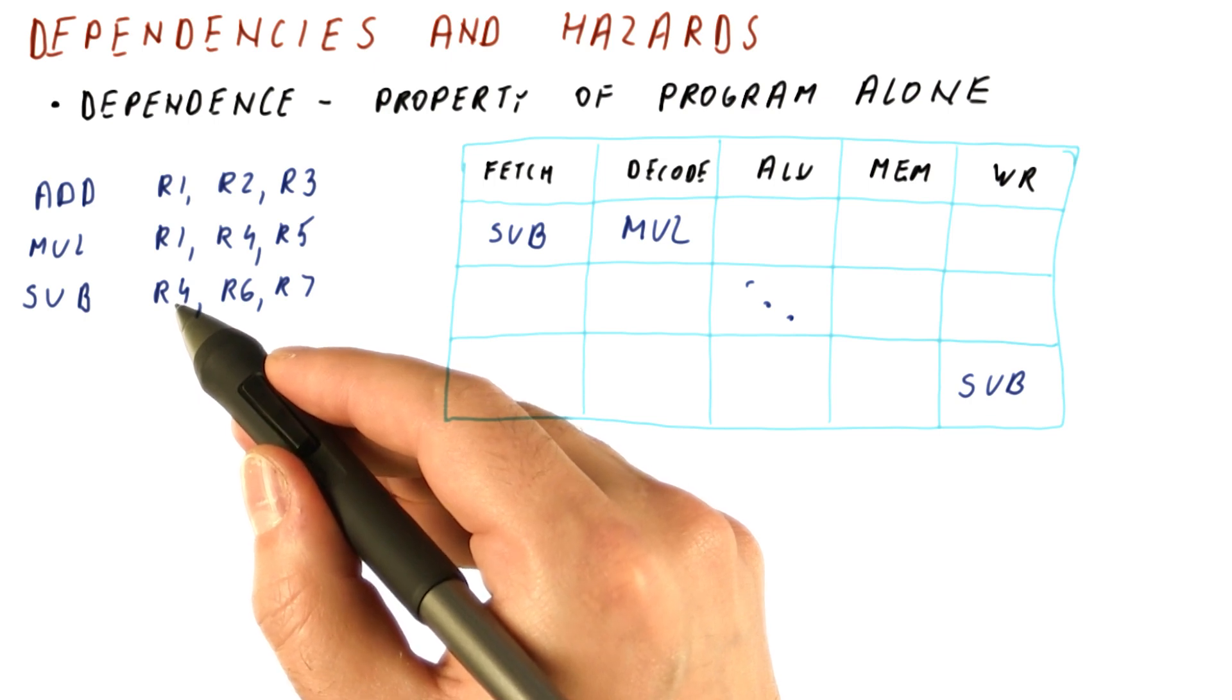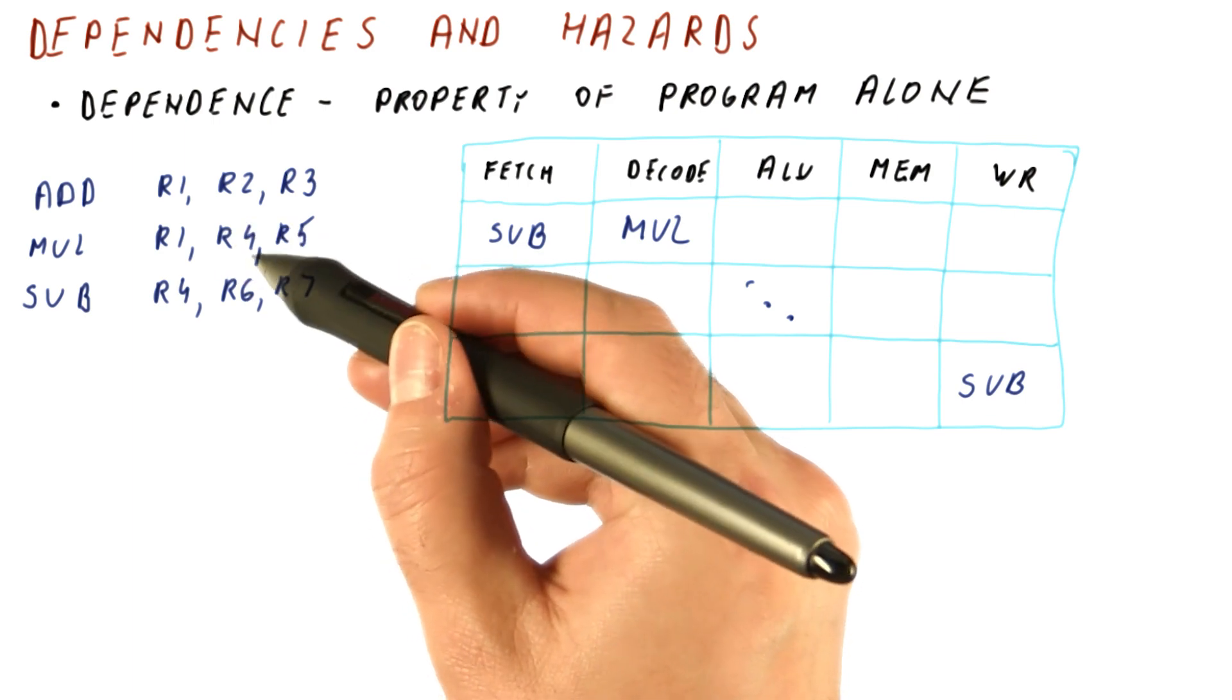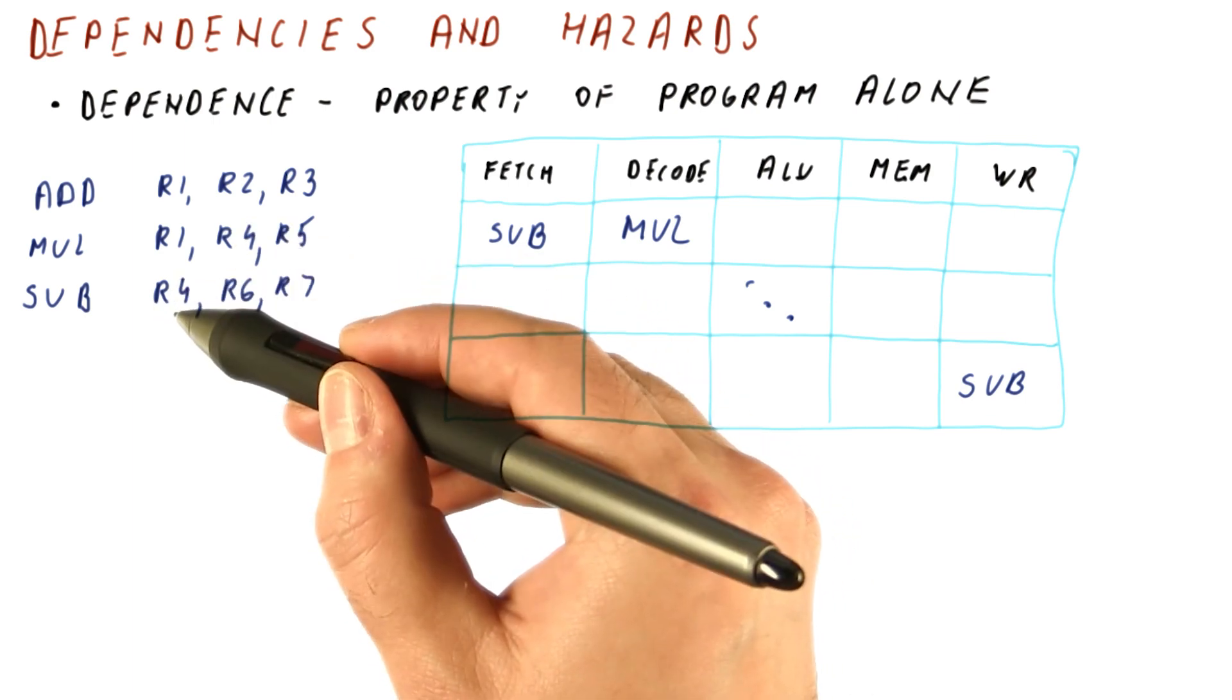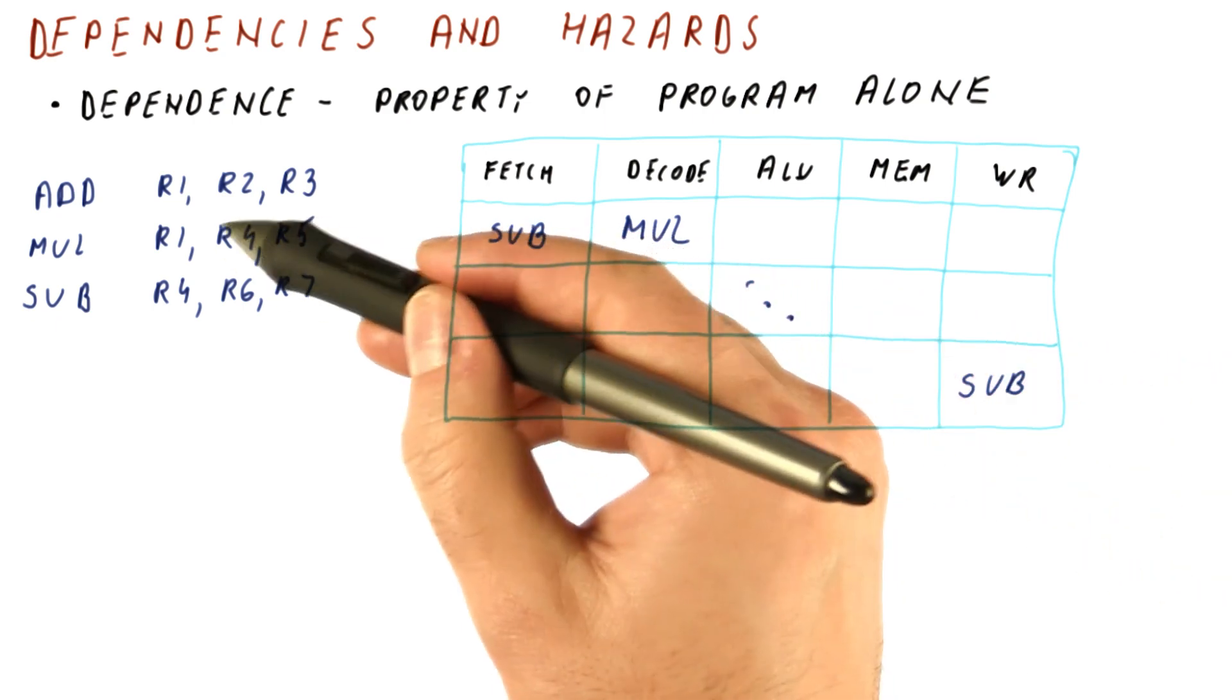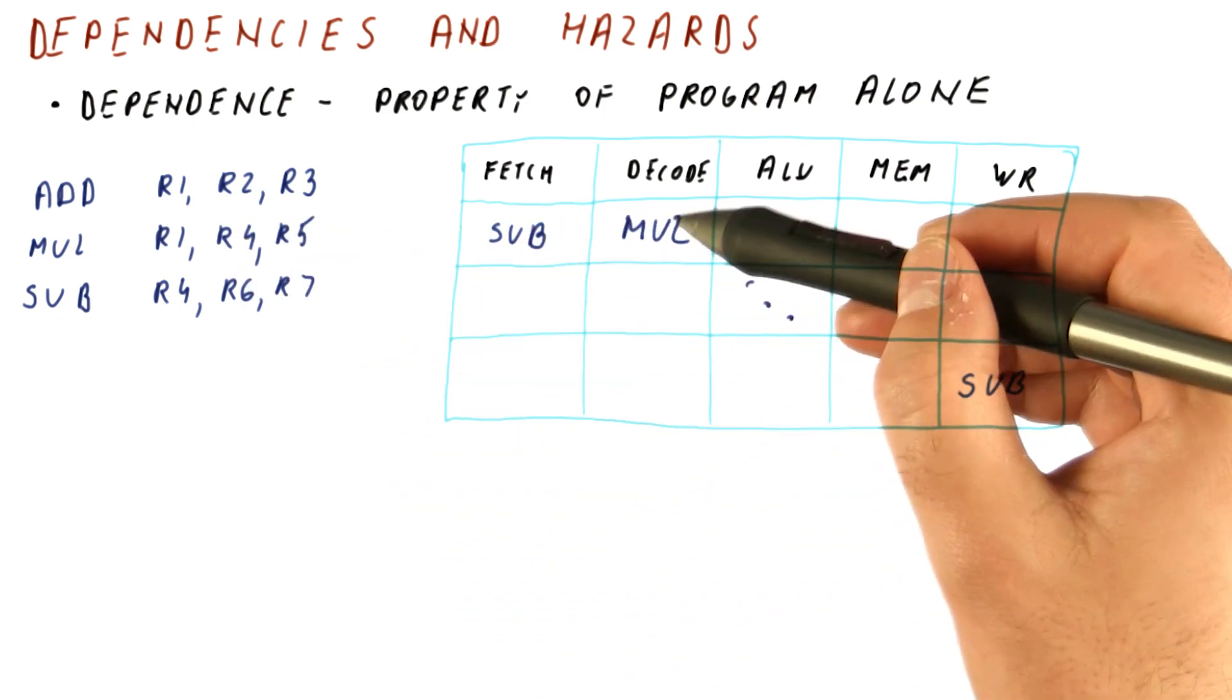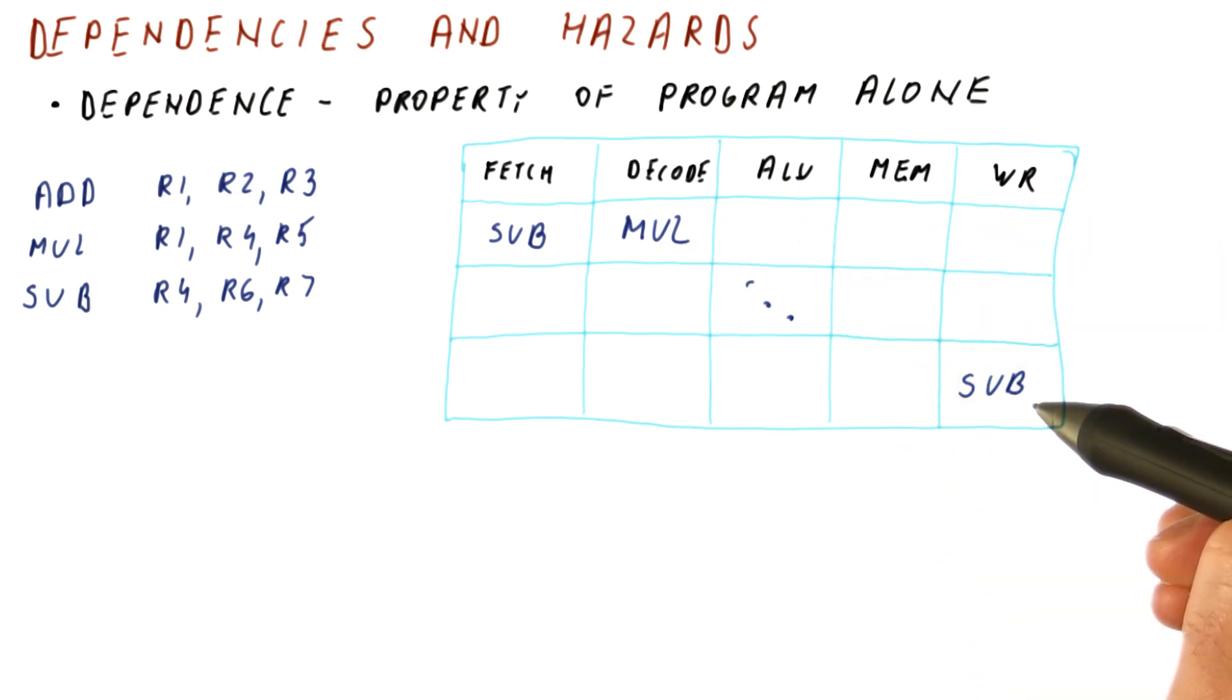And that again means that the fact that there is a dependence between the read and the write in these consecutive instructions is never a problem for our pipeline, because the read of R4 in the multiply occurs many cycles before the subtract overwrites that value.